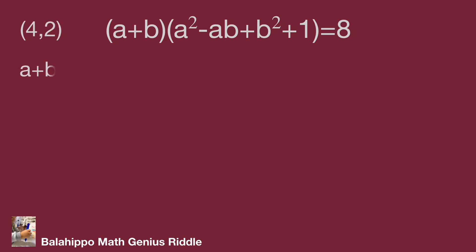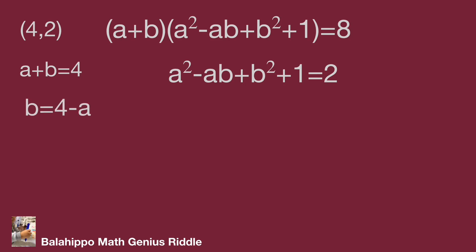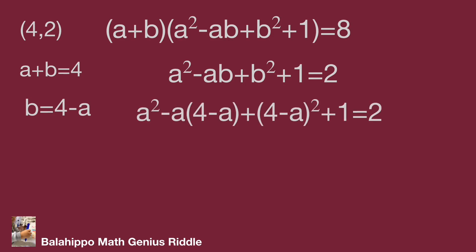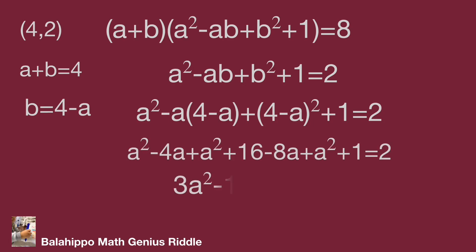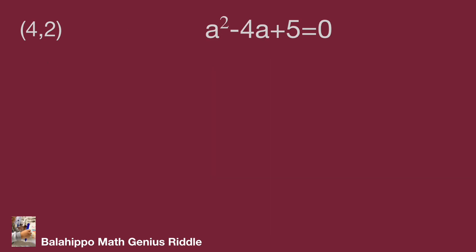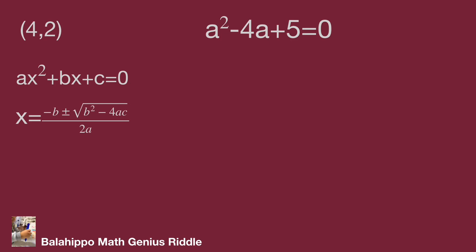In the (4, 2) number group: a plus b equal to four, a squared minus ab plus b squared plus one equal to two, and b equal to four minus a. Substituting gives three a squared minus twelve a plus fifteen equal to zero. Dividing by three: a squared minus four a plus five equal to zero. The discriminant is minus four squared minus four times one times five, which gives a negative value — no real root. This is also not the right number group.